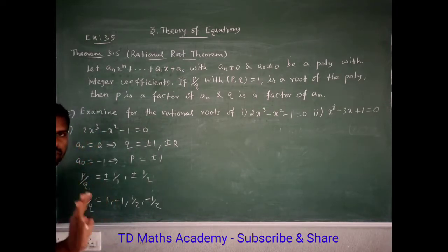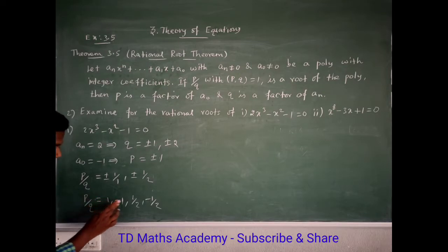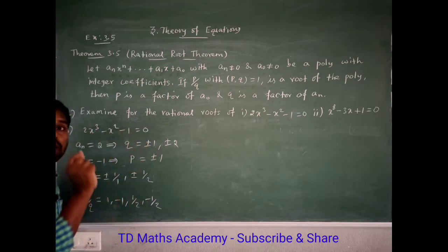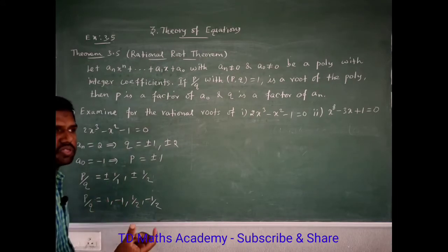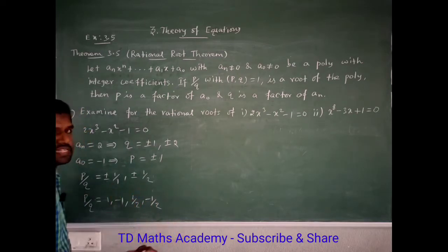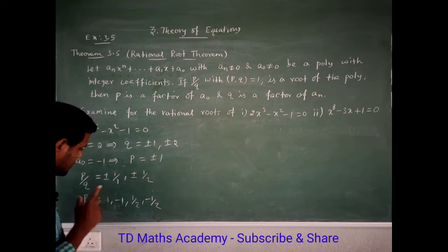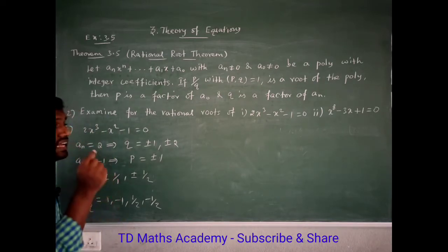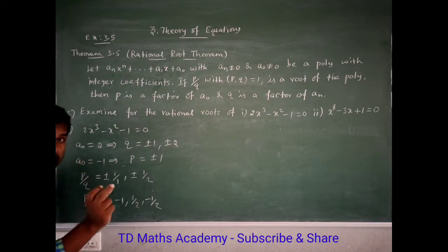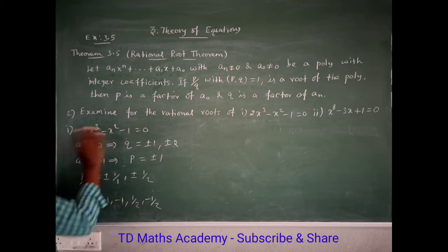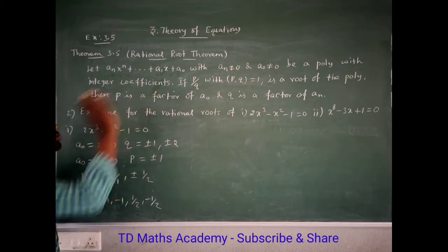Now, looking at the possible p/q values, these are the 4 candidate rational roots. Any rational root of this polynomial equation must be among these. Since this is a cubic equation with 3 roots, maybe 1 root, 2 roots, or all 3 roots are rational. In this particular sum, the rational root candidates are plus 1, minus 1, plus 1/2, and minus 1/2.